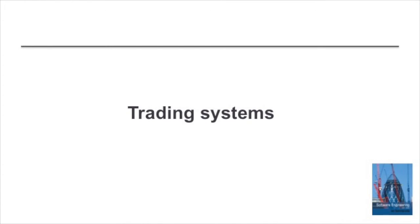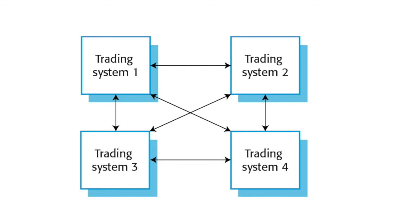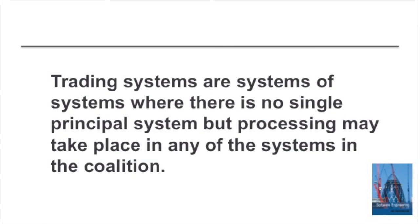The final architectural pattern I want to talk about for systems of systems is the trading systems pattern. This is a situation where we have a number of separate systems which trade information with each other — they exchange information, sometimes on an ad hoc basis, sometimes on a very organised and controlled basis. There's no single principal system; what we have is a coalition of systems where processing can take place within any of the constituent systems.